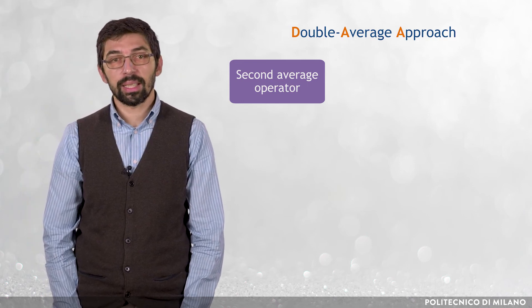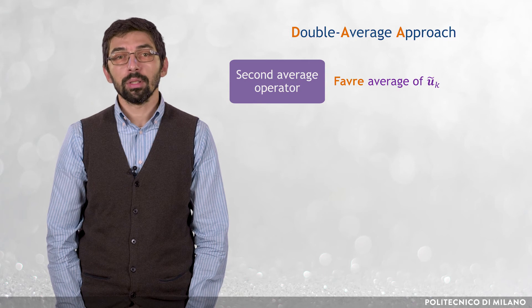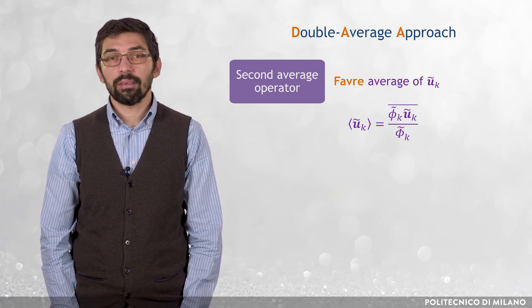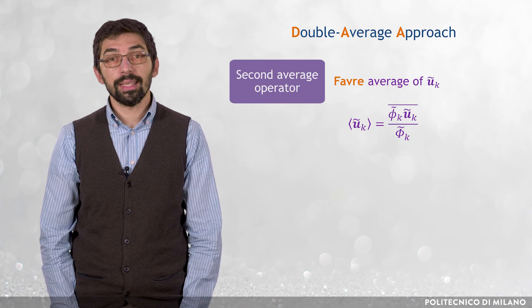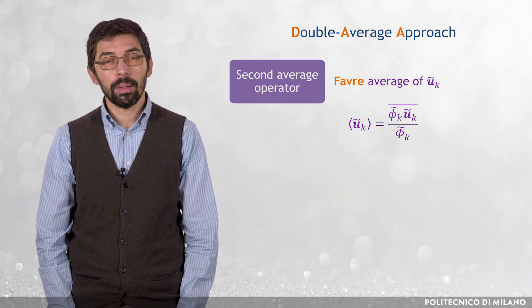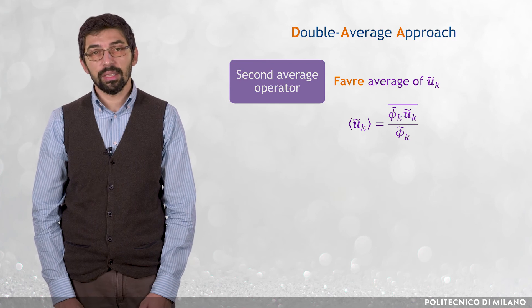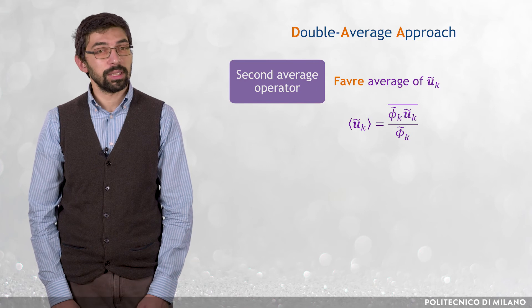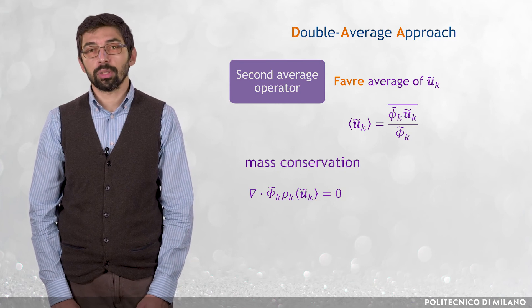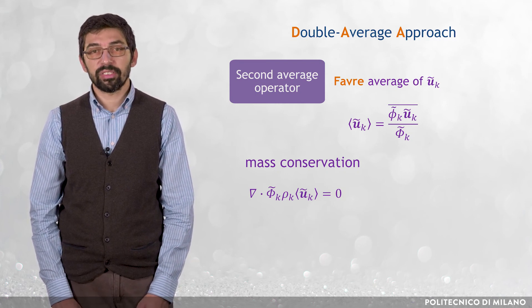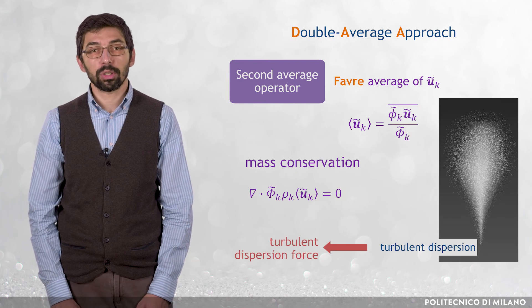Instead of simply performing a Reynolds average of the volume-average equations, some models apply the Favre averaging operator to the velocity tilde u k. The Favre averaged velocity, referred to as angular tilde u k, is defined as the ratio between the Reynolds average of the product tilde phi k tilde u k and the Reynolds average volume fraction capital tilde phi k. It can be demonstrated that if expressed in terms of angular tilde u k, no phase diffusion fluxes come up in the mass conservation equation. In order to account for the turbulent dispersion of solid particles, models based on this type of averaging approach include an additional force in the momentum equation of the two phases, often referred to as turbulent dispersion force.